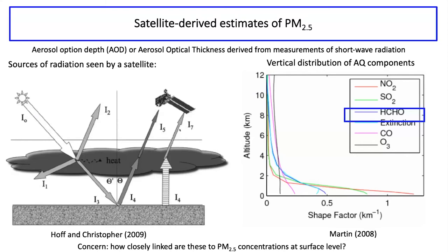It's a complicated story — it's not just a single signal related to PM2.5 concentrations at the surface. It has a lot to do with the radiation balance between the surface and the satellite, and the fact that aerosols don't necessarily always sit right at the surface. This is a plot of the vertical distribution of concentrations for different gases and extinction. The light blue line is aerosol extinction — how much radiation is being scattered or absorbed by aerosols as a function of altitude — which tells you on average where the aerosols interacting with satellite-measured radiation are located.